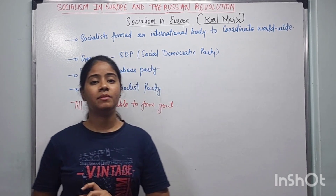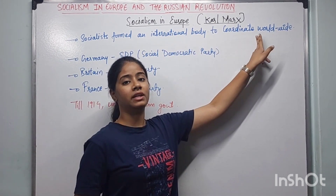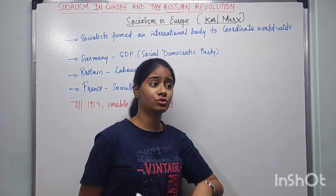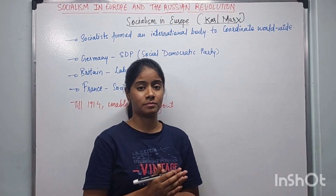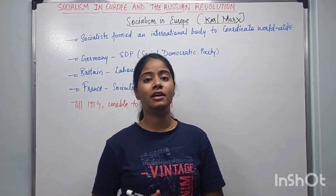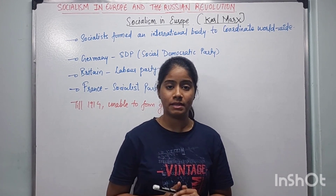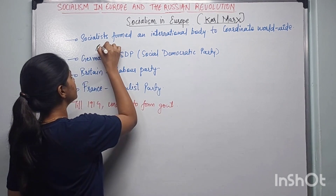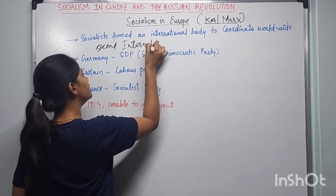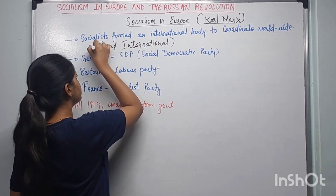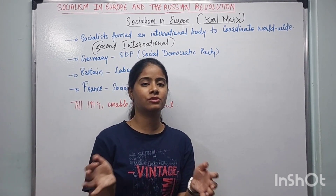The socialists formed an international body to coordinate worldwide — meaning, to bring together all the people around the world who wanted to know about socialism, establish socialism, and promote it in their own countries. This body was called the Second International, whose purpose was to bring all socialist people together.